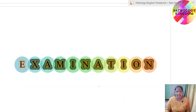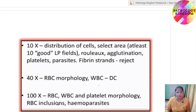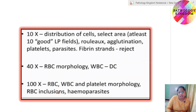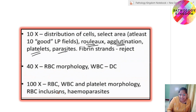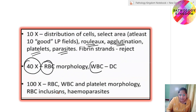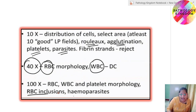Now, coming on to the examination part — how to examine a PBF. Start with 10x: observe the distribution of cells, select the appropriate area for examination, and look for rouleaux formation, agglutination, clumped platelets, or any parasite. At 40x, see the morphology in detail of all three blood components — RBC, WBC, and platelet. On 100x, confirm the morphology if you have any doubt from 40x, and also observe any RBC inclusions and hemoparasites.